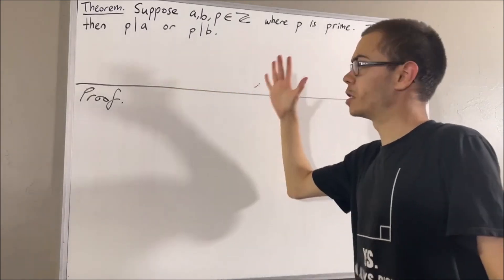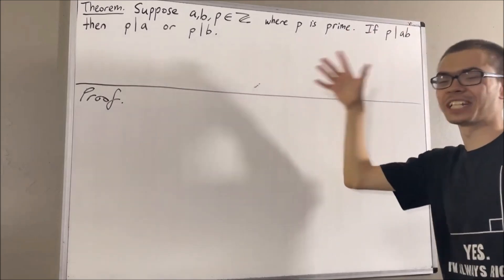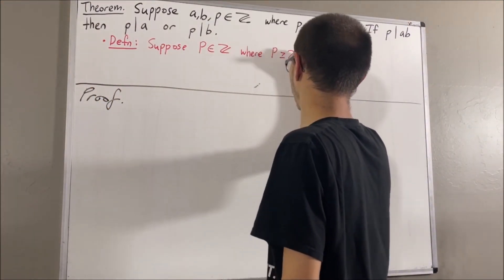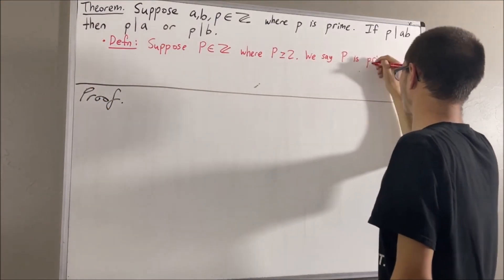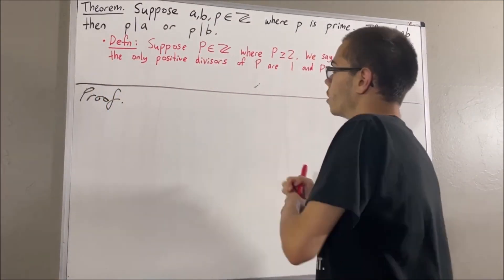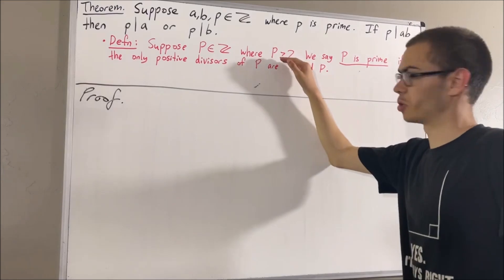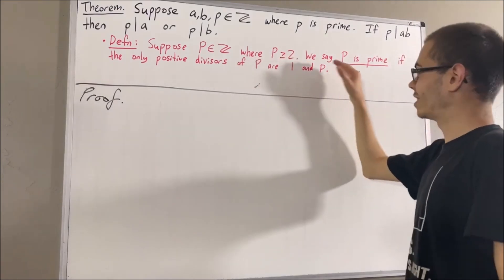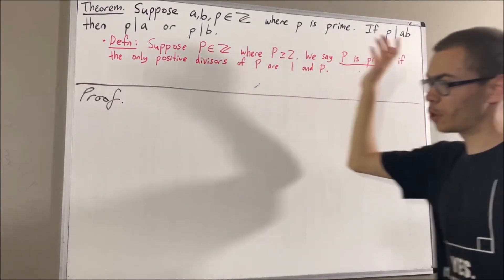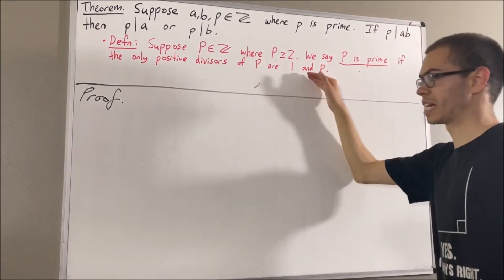Our definition of a prime number is as follows. Suppose p is an integer where p is greater than or equal to 2. We say p is prime if the only positive divisors of p are 1 and p.